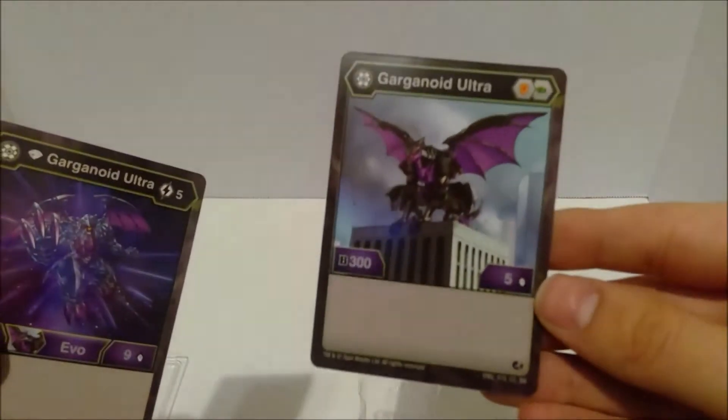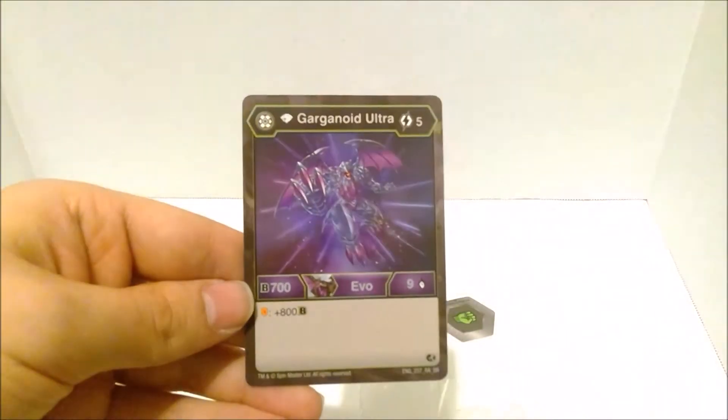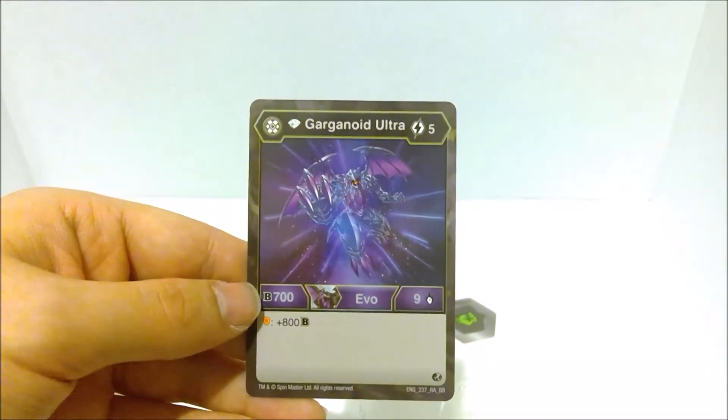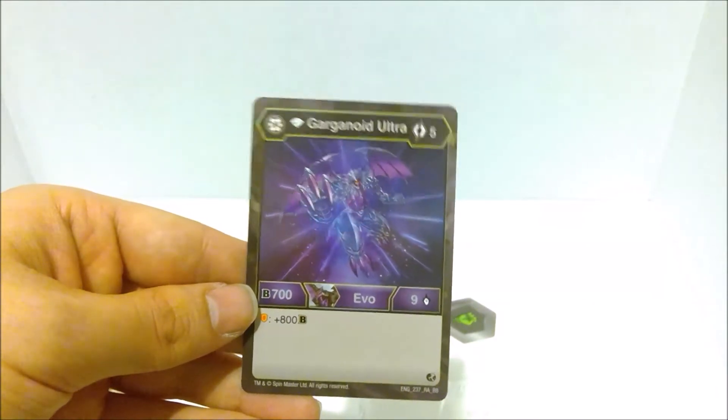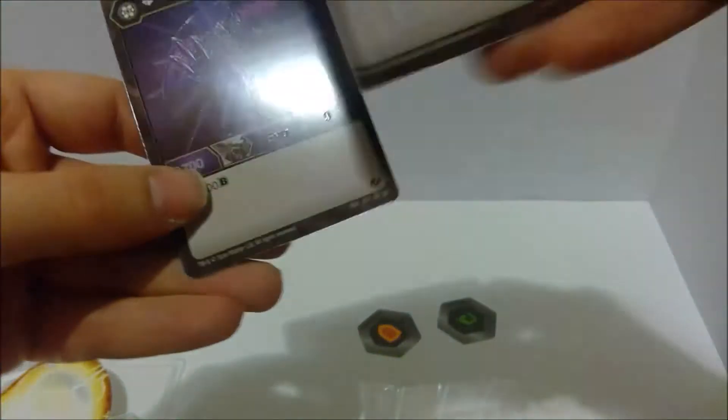And really quick, look at his cards. So there is his character card. 305. Decent. And then his Evo. For 5, 709. If he lands on a shield, plus 800. So it would be 1509. That's pretty decent for 5. That's not bad at all. So, there's those.